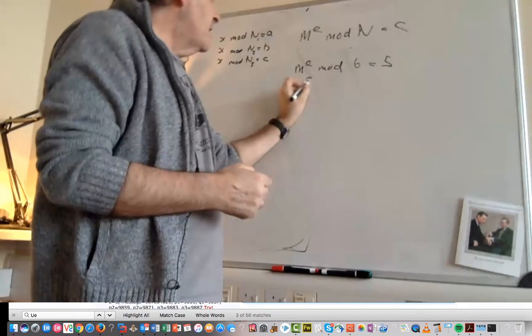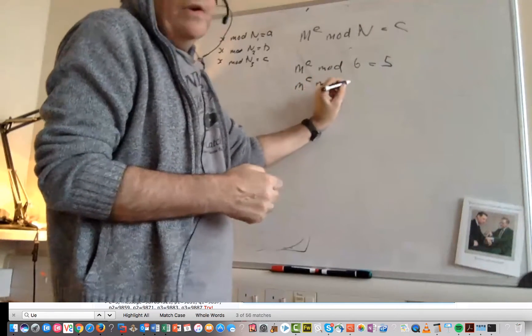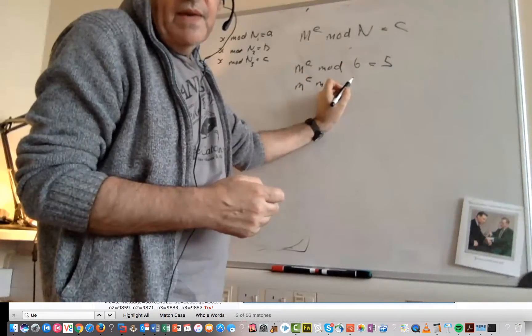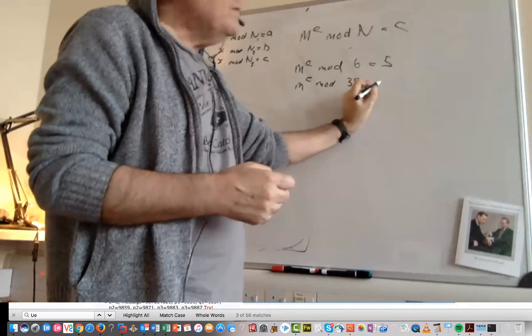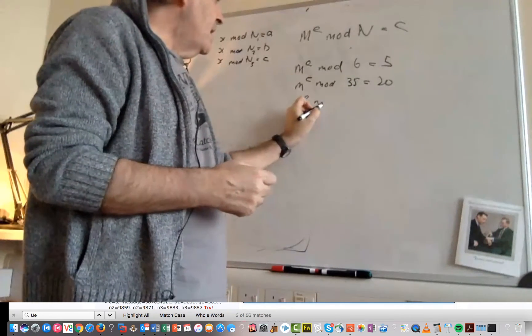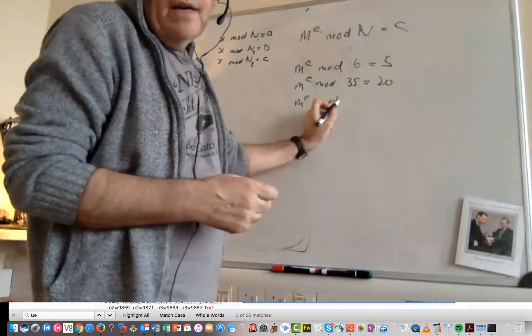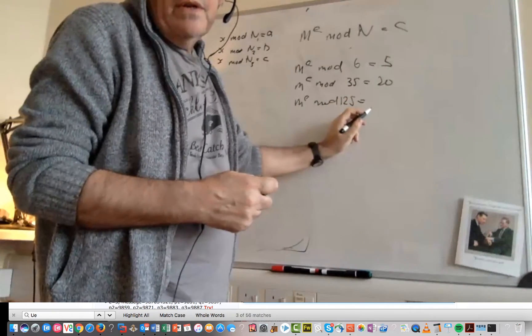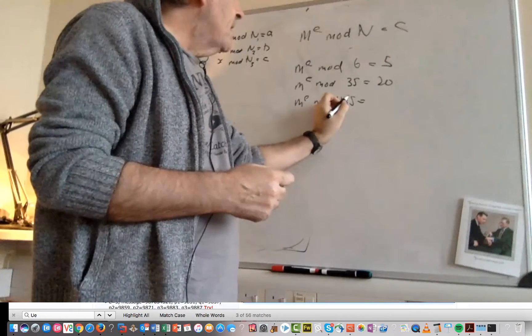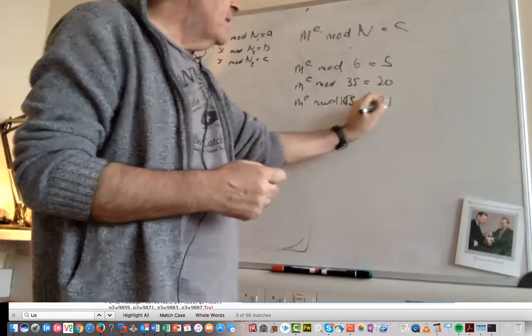M to the power of E mod and then the next one that we have is 35 and then that's equal to 20 and M to the power of E mod and we have 143 is equal to our cipher there.